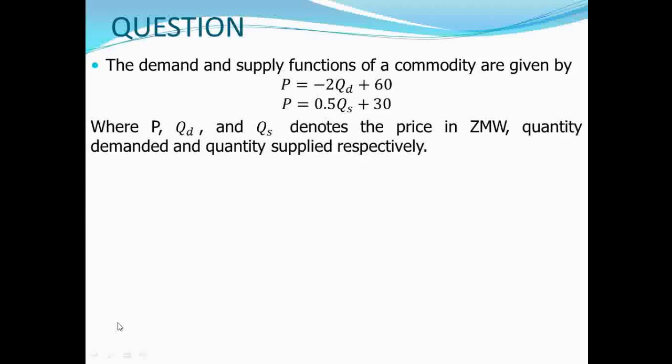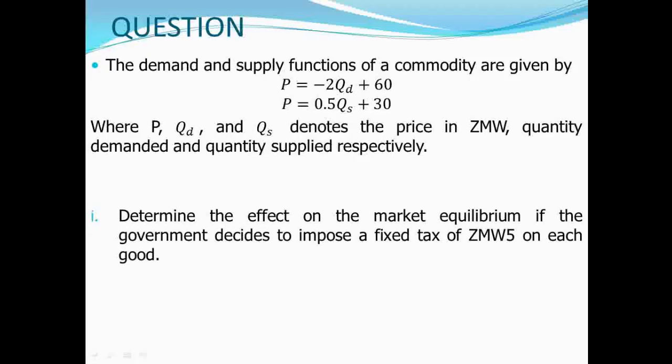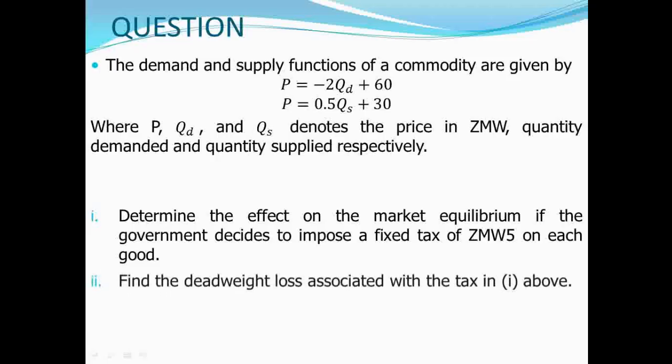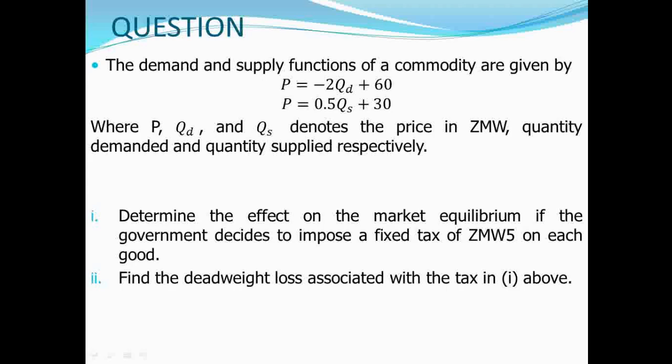We also sketched the demand curve and supply curve and showed the equilibrium price and quantity on the diagram. In part 2, we computed the consumer surplus, the producer surplus, as well as the total surplus. In this video, which is part 3, we want to determine the effect on the market equilibrium if the government decides to impose a fixed tax of 5 Kwacha on each good. In addition, we want to find the deadweight loss associated with the tax. Deadweight loss is simply the loss in the welfare that accrues to nobody in the market.